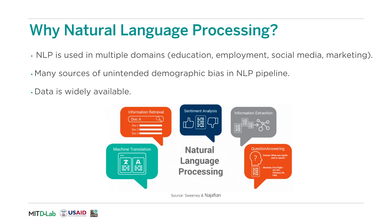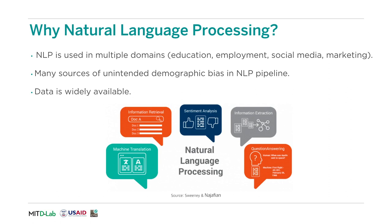This work focuses on applications of machine learning in natural language processing. NLP is important to study in fairness in AI because it is used in many different domains, from education to marketing. Furthermore, there are many sources of unintended demographic bias in the standard NLP pipeline, which we define as the combination of steps involved from collecting natural language data to making decisions based on NLP models trained on the resulting data.